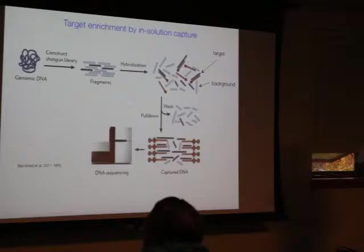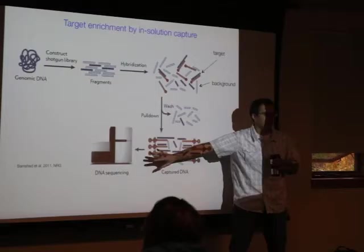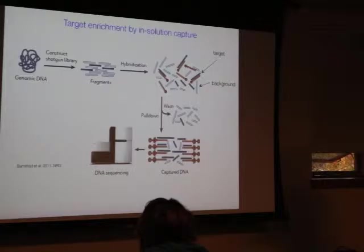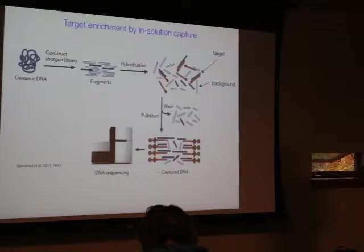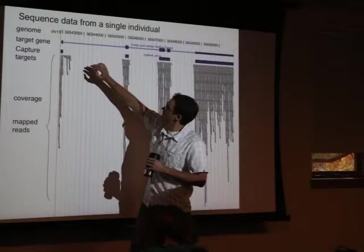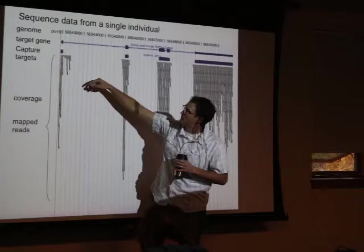Target enrichment is predominantly done now via in-solution capture. You start with genomic DNA, break it into pieces, and construct a library. If you're interested in just a subset of the genome — shown here in dark blue — you hybridize this whole genome complement to a probe set matching those targeted areas. The most common approach now is to have these probes be biotinylated so you can pull them out of solution with a magnet. You're enriching: washing away background, enriching for your target, catching your DNA, and that's what you put on the machine.